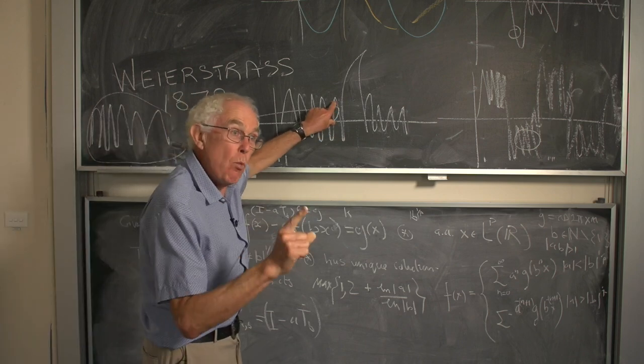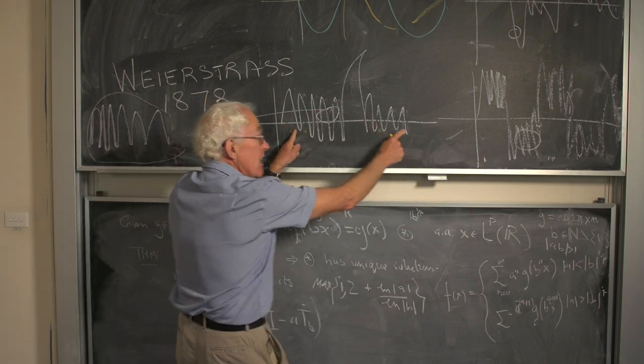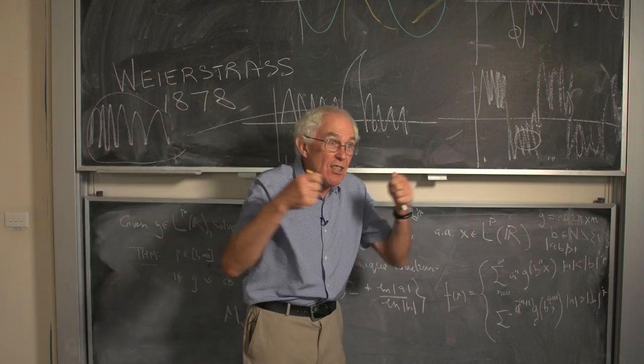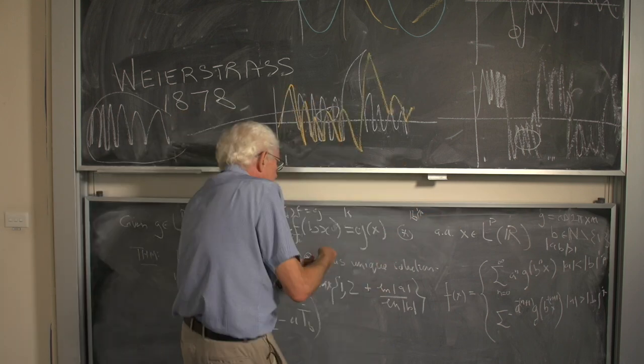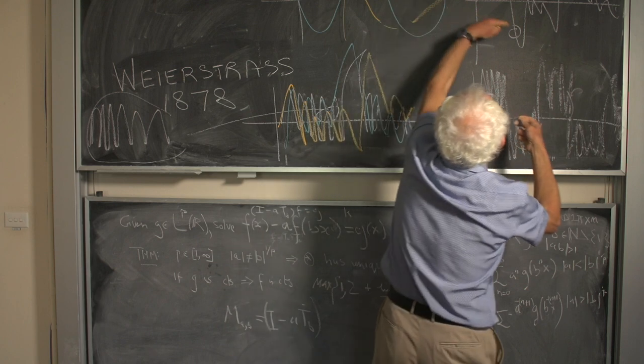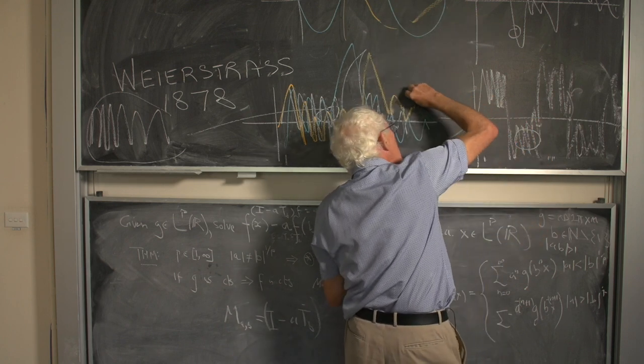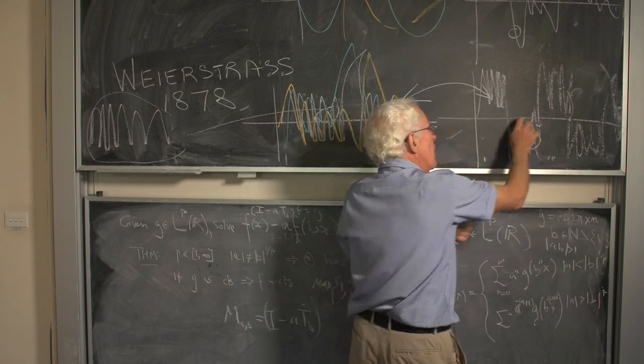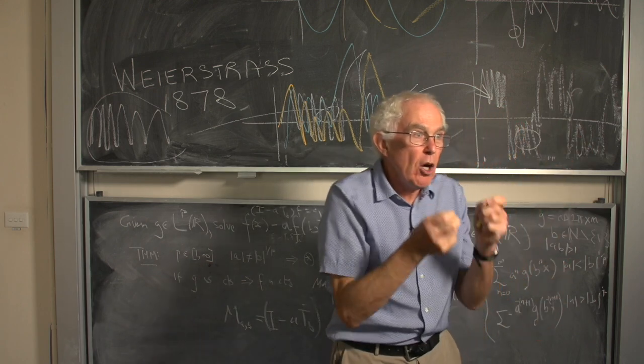Well it turns out that if you take a collection of Weierstrass functions with different scalings, you can take them and add them up just like we added up those ones to make arbitrary signals that have the same complexity.